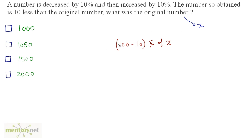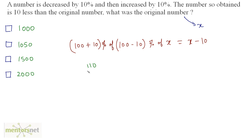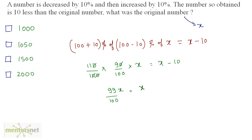This value, after decreasing by 10%, is then increased by 10%. So the final value is 100 plus 10% of that result, which equals 110% of 90% of x. It is given that the number so obtained is 10 less than the original, so this equals x minus 10. That gives us 110 by 100 times 90 by 100 times x equals x minus 10, which simplifies to 99x upon 100 equals x minus 10.